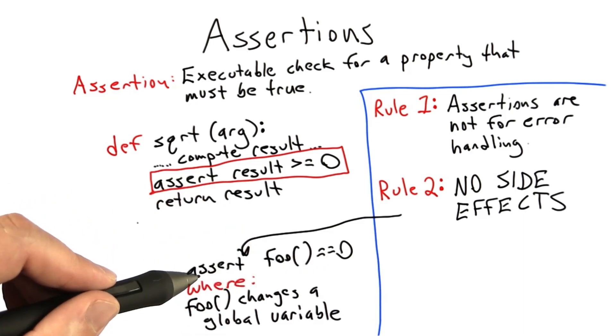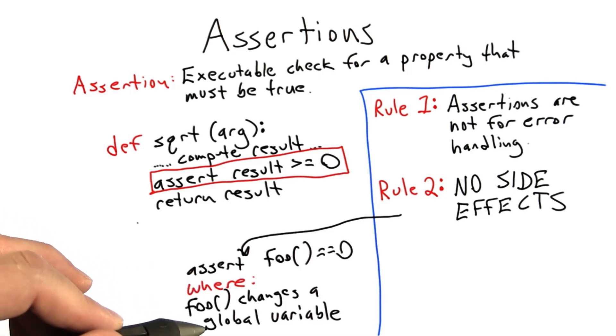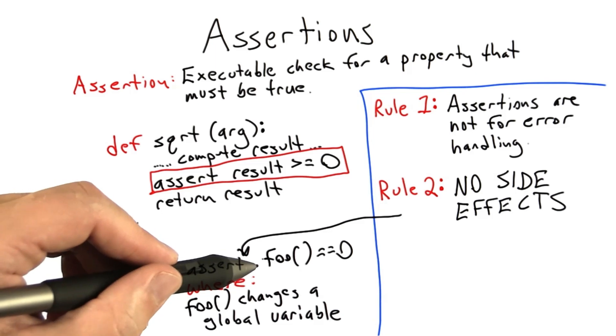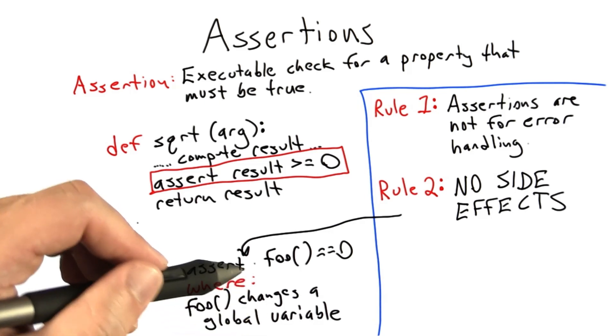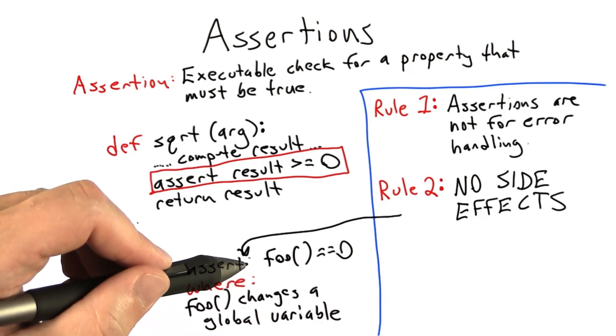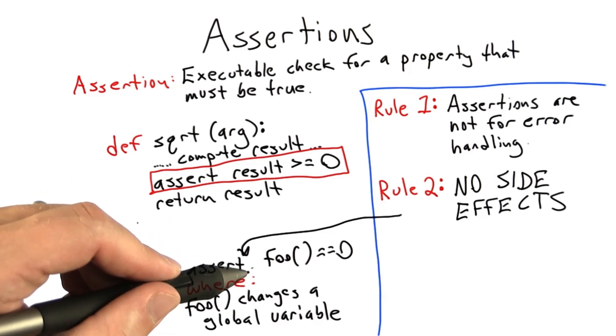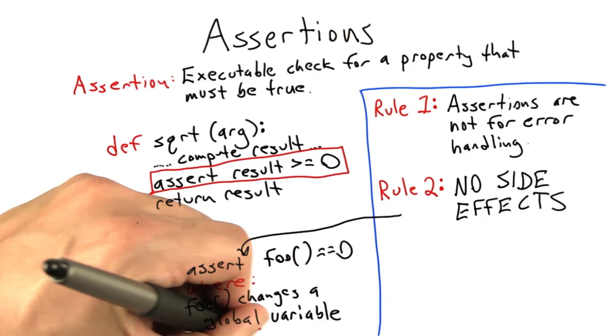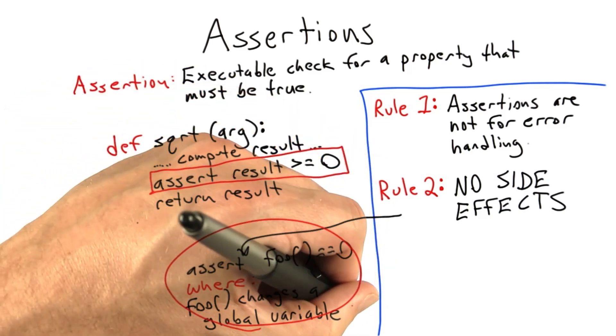So what we're going to have is a program which happens to work correctly because the assertion changes a value in some way that's needed. But on the other hand, when we turn on optimizations and drop all of the asserts, then the program's going to stop working. And this makes the assertions worse than useless. This is almost the worst possible thing you can do with an assertion, is have an assertion in your code that changes the global state in some observable fashion. So, we definitely don't want to do this.